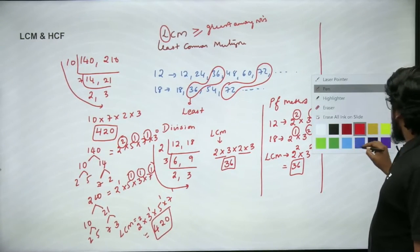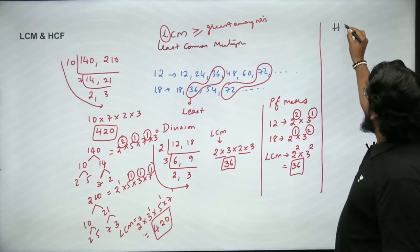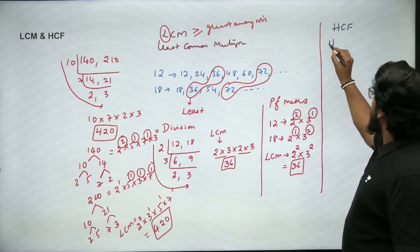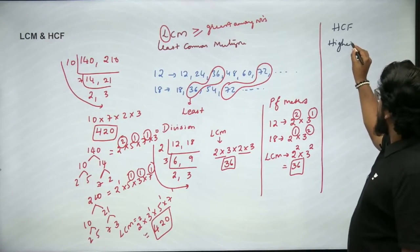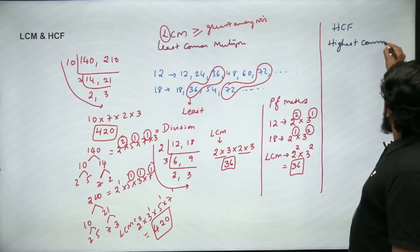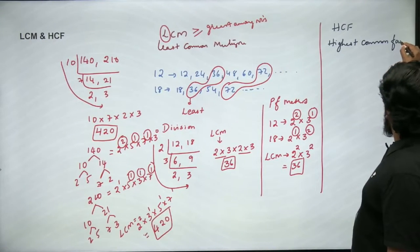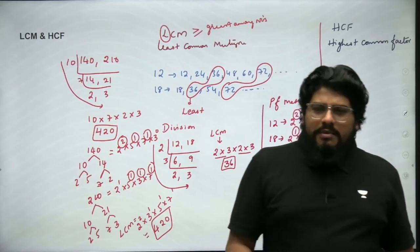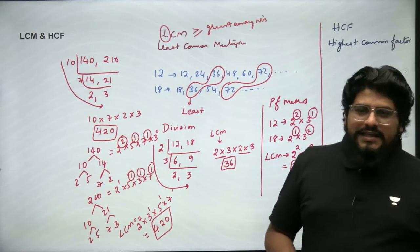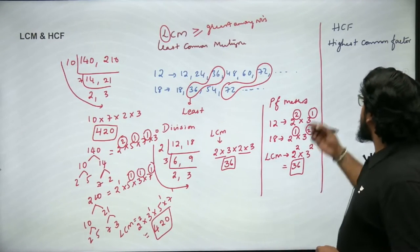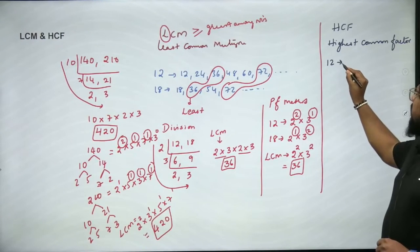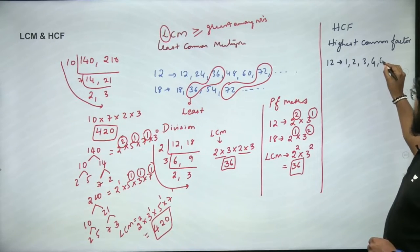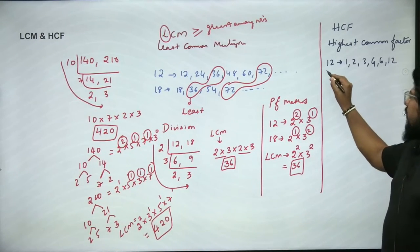Now let's look at HCF — Highest Common Factor. We need to find the common factors of two numbers and pick the highest one. Factors of 12 are: 1, 2, 3, 4, 6, and 12. Factors of 18 are: 1, 2, 3, 6, 9, and 18.